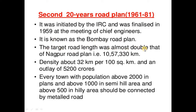The target road length was almost double that of the Nagpur Road Plan — 10,57,330 km — with a density of about 32 km per 100 square km and an outlay of 5,200 crores. Every town with a population above 2,000 in plains, above 1,000 in semi-hill areas, and above 500 in hilly areas should be connected by metal roads.